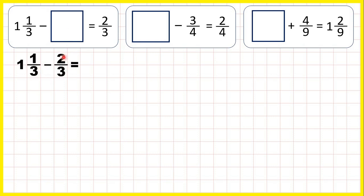But we're subtracting two thirds and in the fraction part of our mixed number, we only have one third. So we need to change one and one third into an improper fraction.